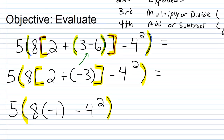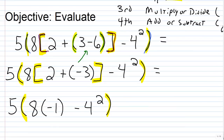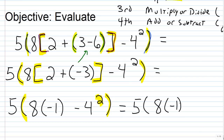The next highest priority is exponents. We have an exponent on 4 squared, so we evaluate that next. 4 squared is 4 times 4, which is 16. The expression becomes: 5 times the quantity, 8 times negative 1, minus 16.